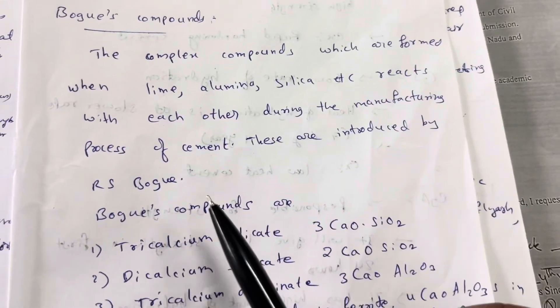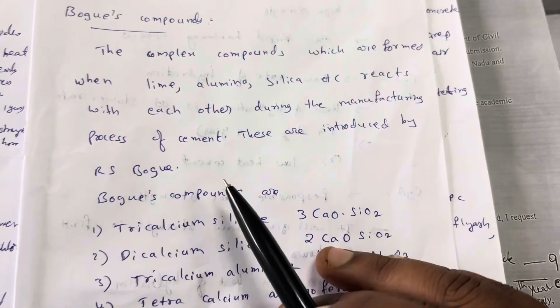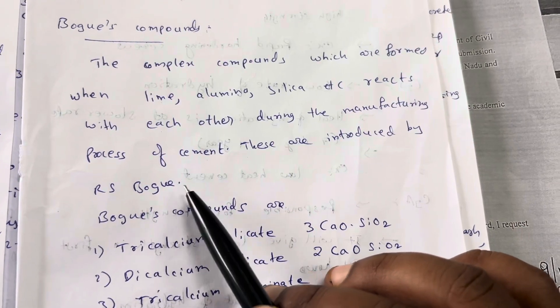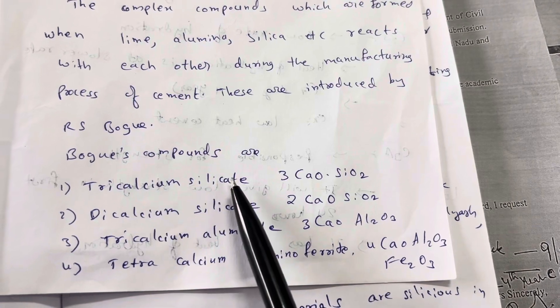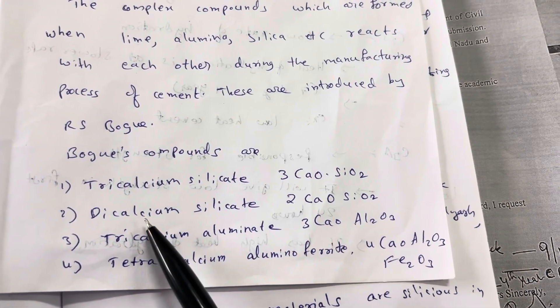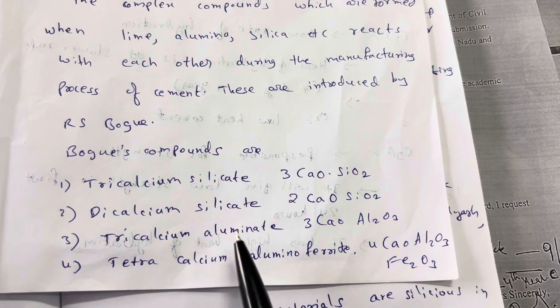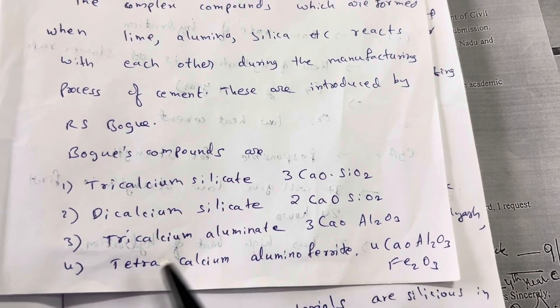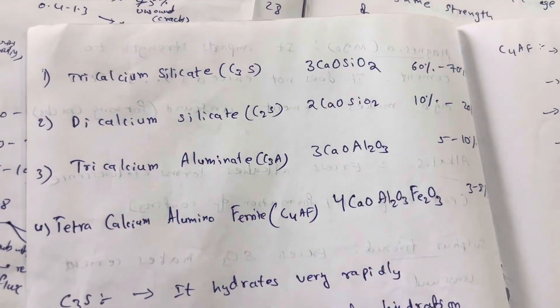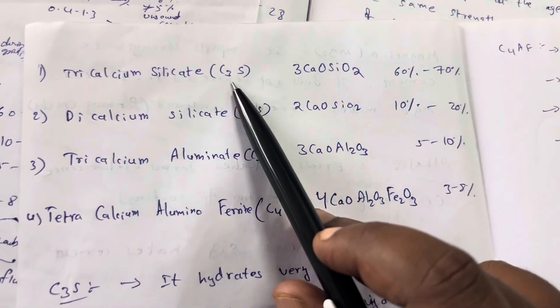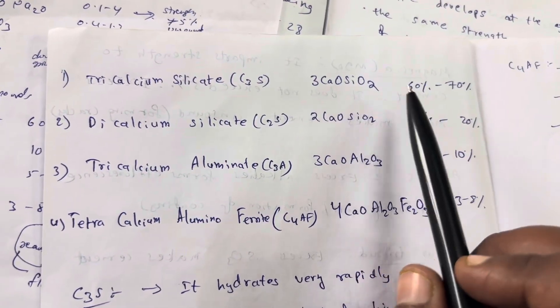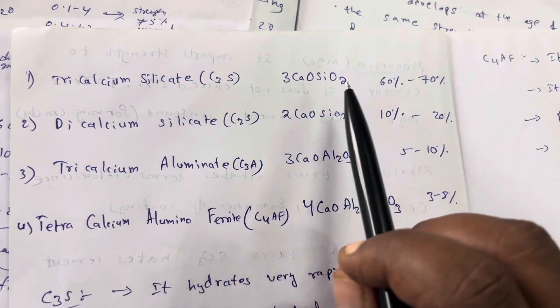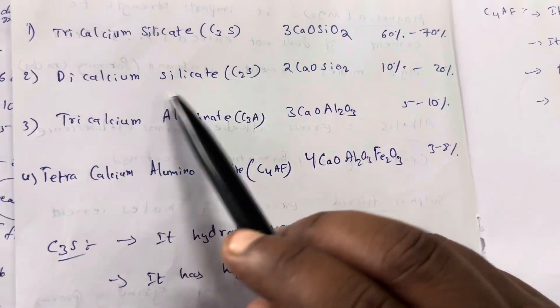These compounds were introduced by R.S. Boggs. The Boggs compounds are: first, tricalcium silicate; second, dicalcium silicate; third, tricalcium aluminate; and fourth, tetra calcium aluminum ferrite. Tricalcium silicate C3S is 3CaO·SiO2, 60-70%. Dicalcium silicate C2S is 2CaO·SiO2, 10-20%.